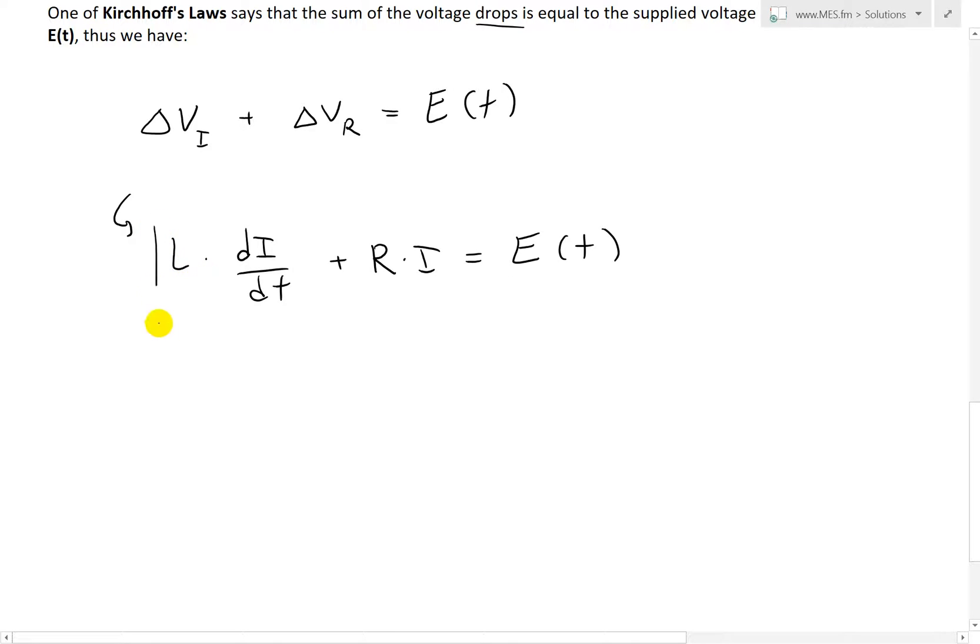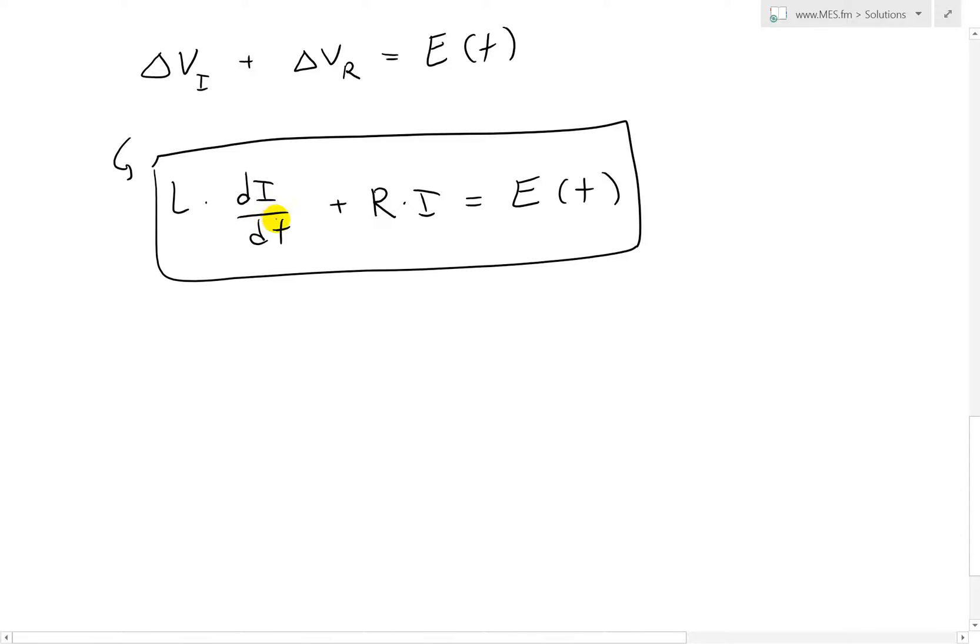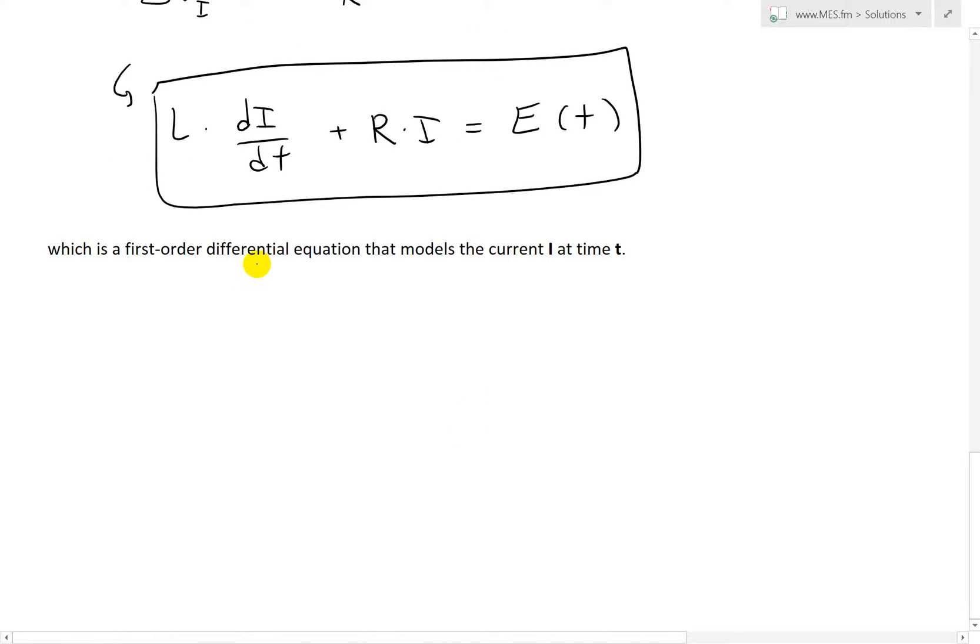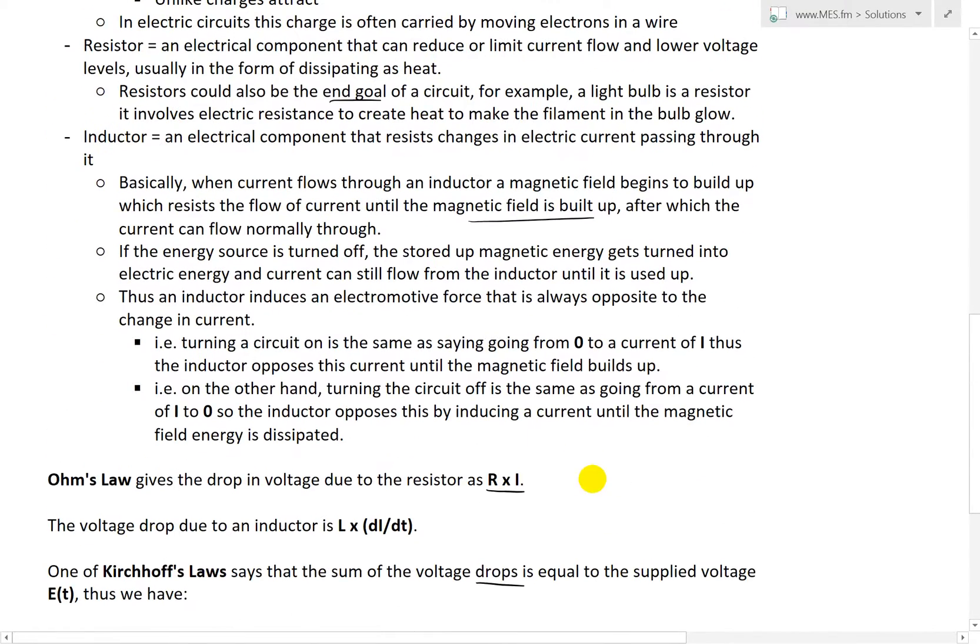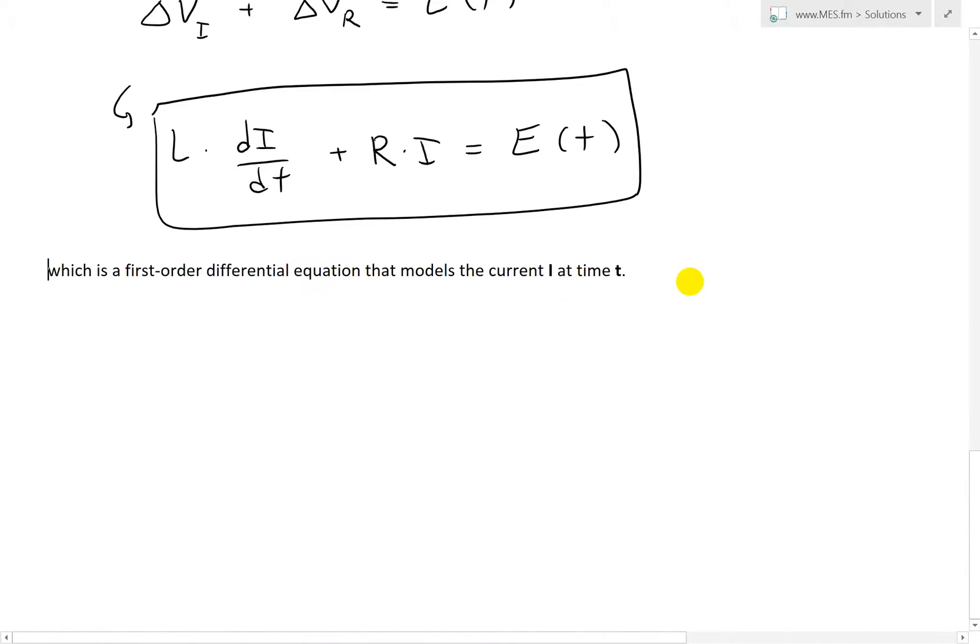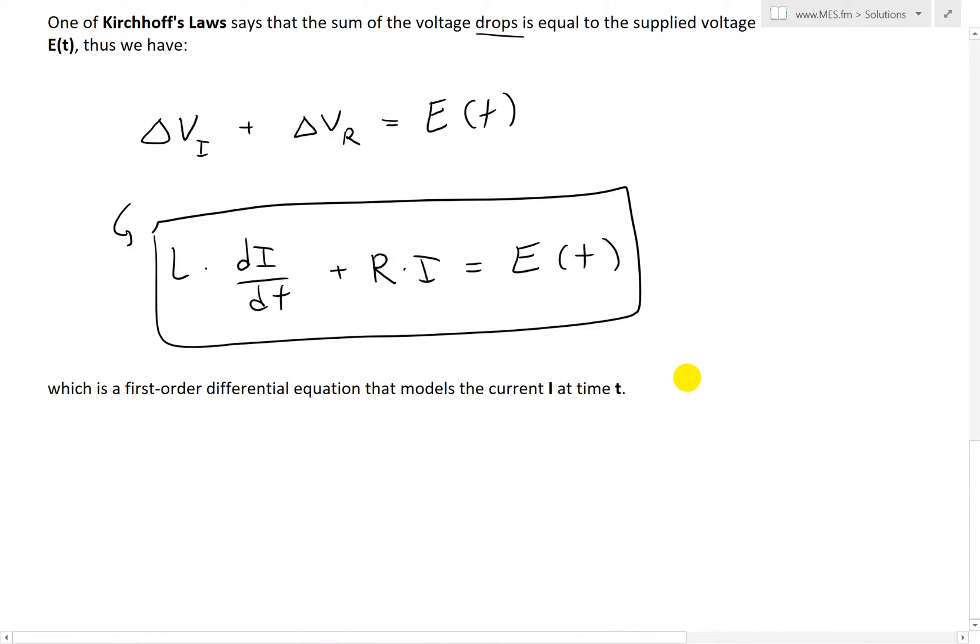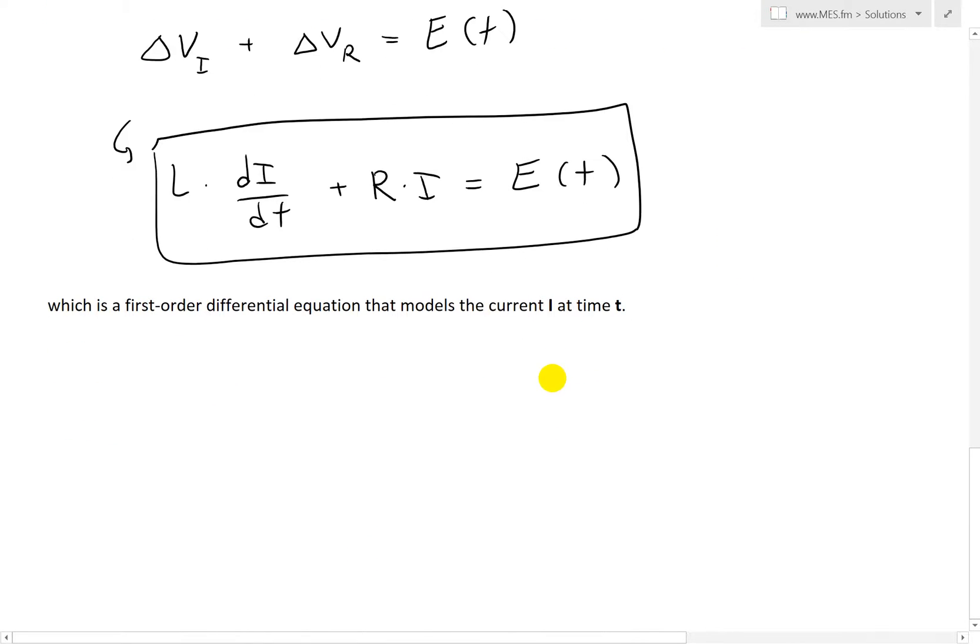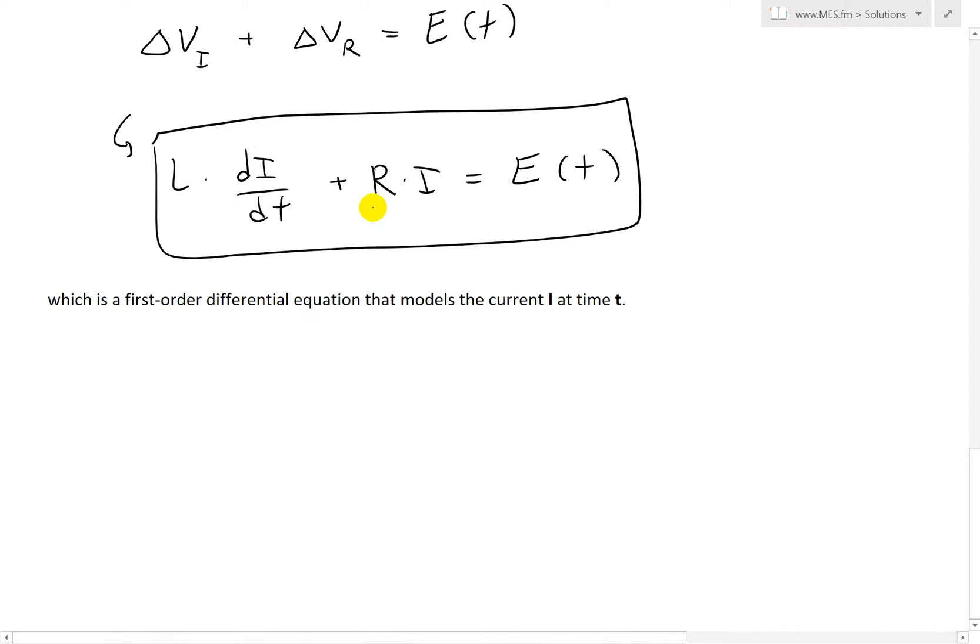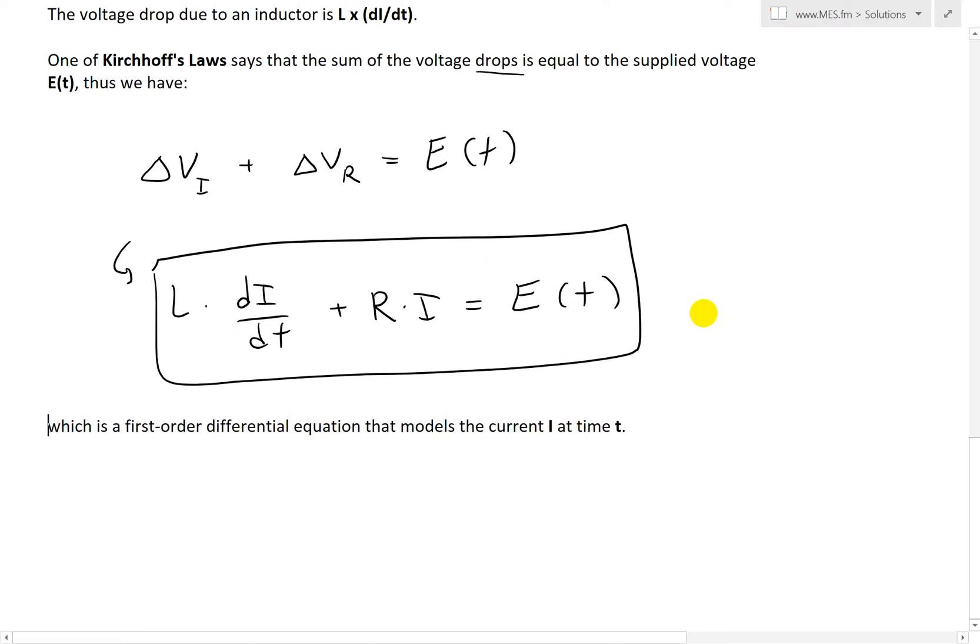So what we end up having here is a first-order differential equation: L dI/dt + RI = E(t). This is a derivative, and there's the function I in there, and there's a derivative of the current. Which is a first-order differential equation that models the current I at time t. All this background I just wanted to go over to help explain a bit more for the example I'm going to do in my next video, and how electrical circuits is an application of differential equations.